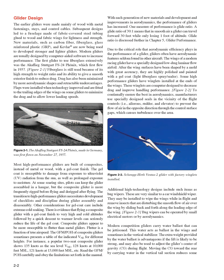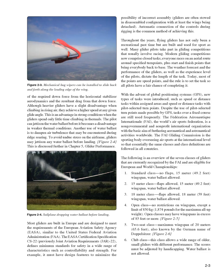Moving the CG toward the rear by carrying water in the vertical tail section reduces some of the required downforce from the horizontal stabilizer aerodynamics and the resultant drag from that downforce. Although heavier gliders have a slight disadvantage when climbing in rising air, they achieve a higher speed at any given glide angle. This is an advantage in strong conditions when the gliders spend only little time climbing in thermals. The pilot can jettison the water ballast before it becomes a disadvantage in weaker thermal conditions. Another use of water ballast is to dampen air turbulence that may be encountered during ridge soaring.